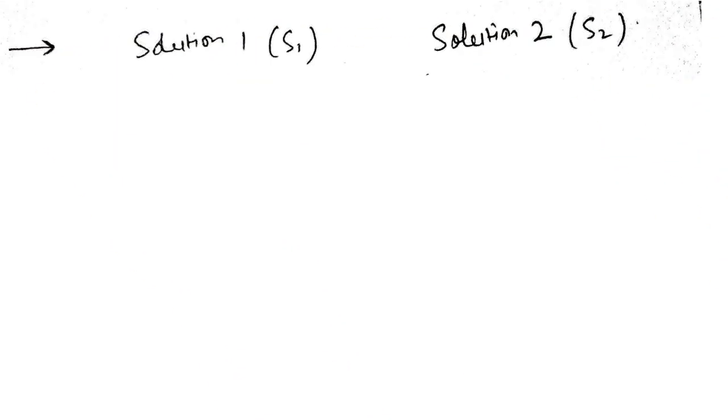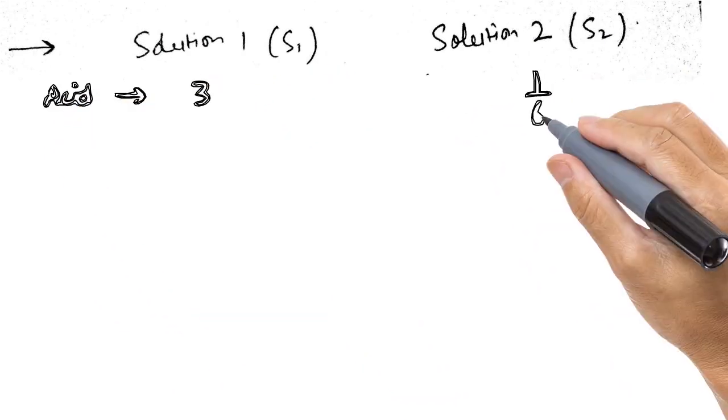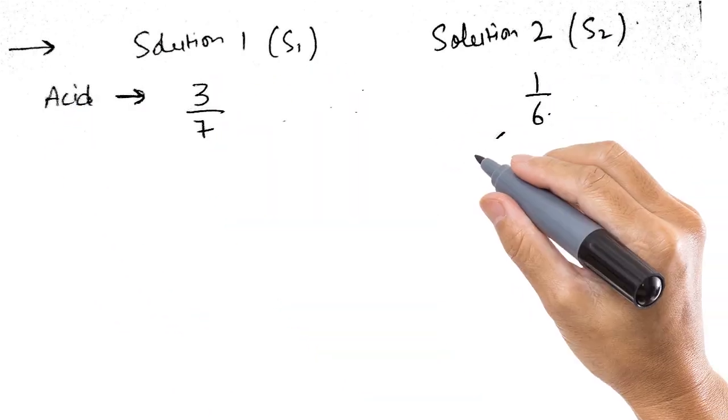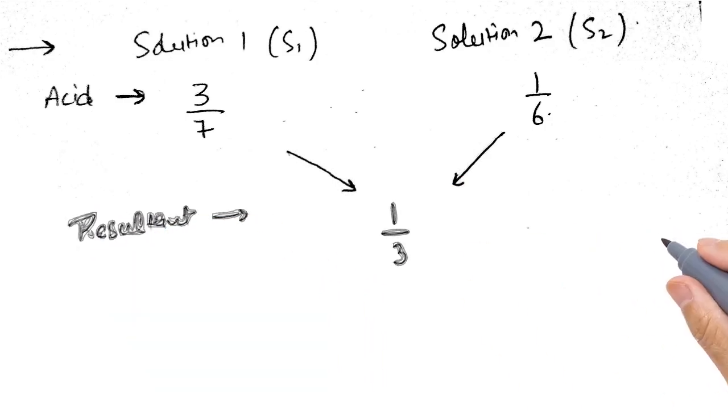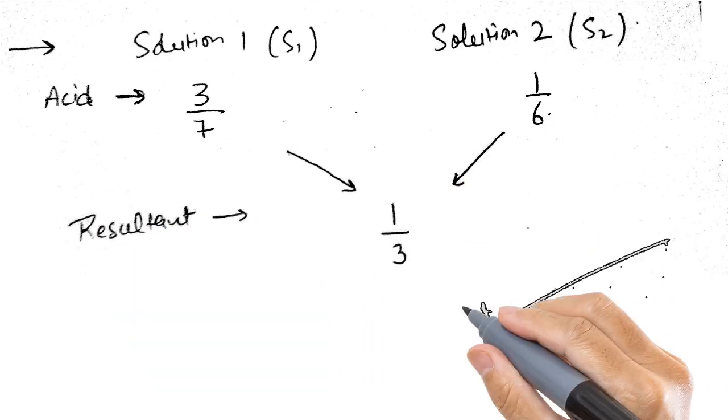Let's see the right way of doing it. We again write solution 1 and solution 2 on top. Here the acid to total ratio would be 3 is to 7 in solution 1 and 1 is to 6 in solution 2. And so is the case with resultant, that is it would be 1 is to 3.